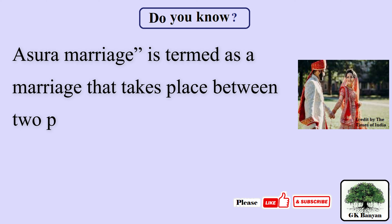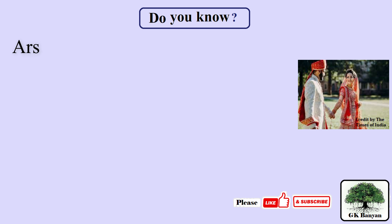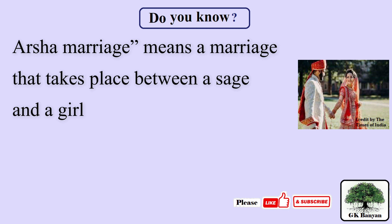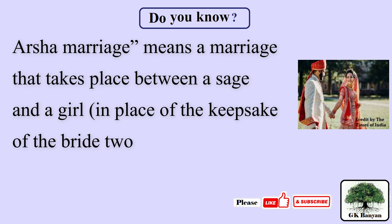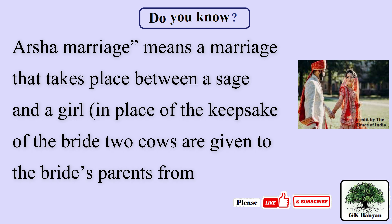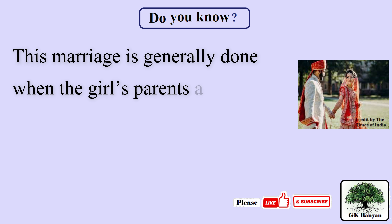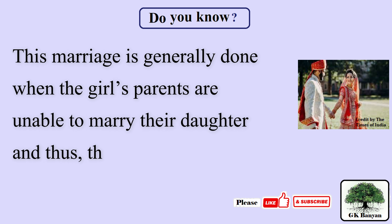Arsha marriage means a marriage that takes place between a sage and a girl. In place of the bride price, two cows are given to the bride's parents from the sage. This marriage is generally done when the girl's parents are unable to marry their daughter, and thus they marry her to an old sage.